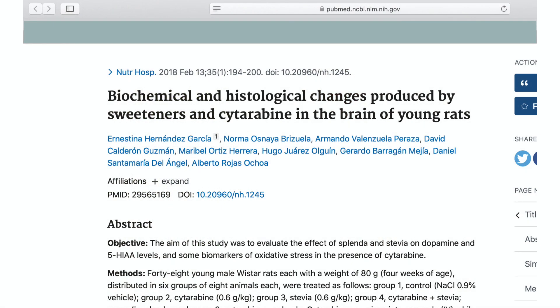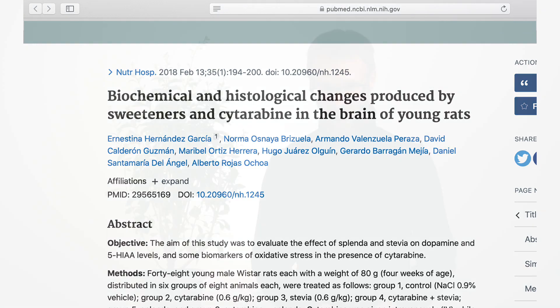Now, here's another study that kind of gives us more insight into this. What do we see here? So here's a study looking at the biological and histological changes produced by sweeteners and the effect on the brain in rats. Once again, you're not a rat. But what they're finding is that two of the brain chemicals, serotonin and dopamine, dopamine is one of the chemicals in the brain that has to do potentially with pleasure or desire.